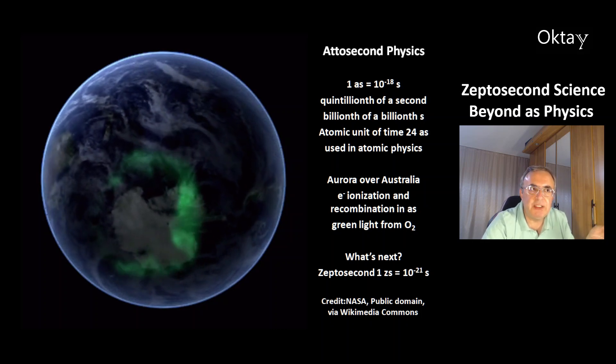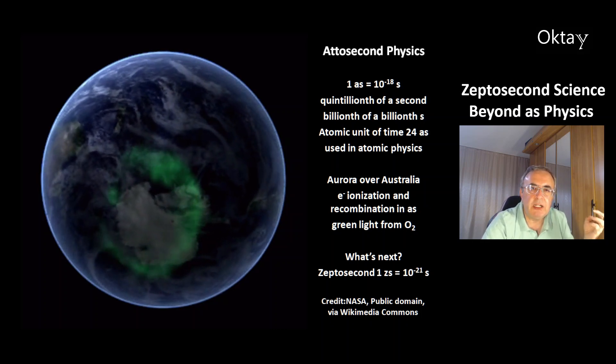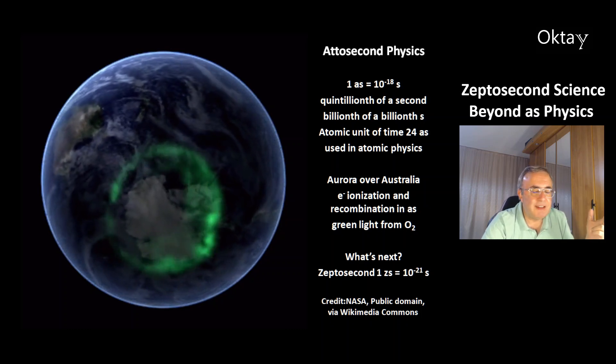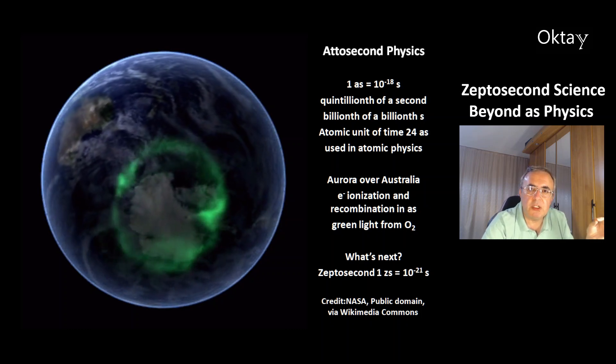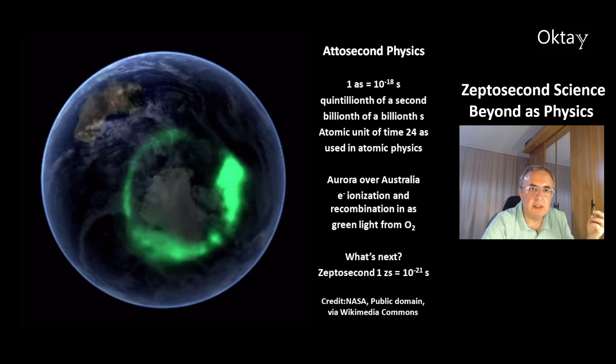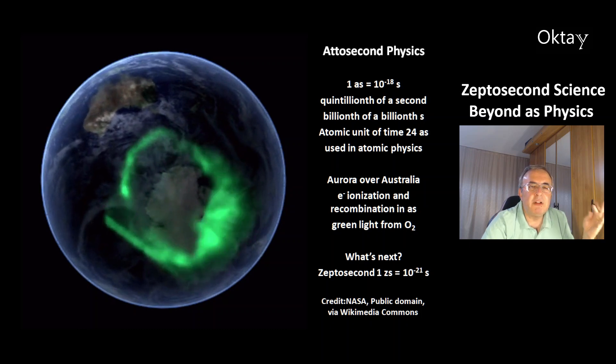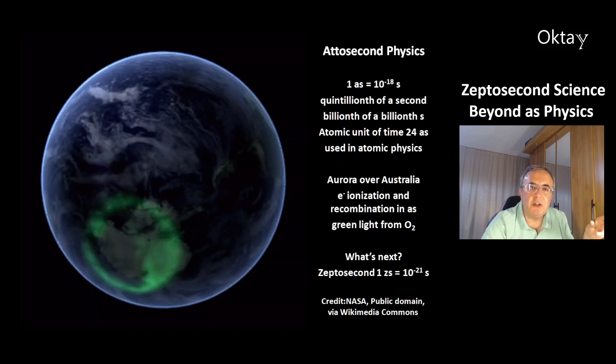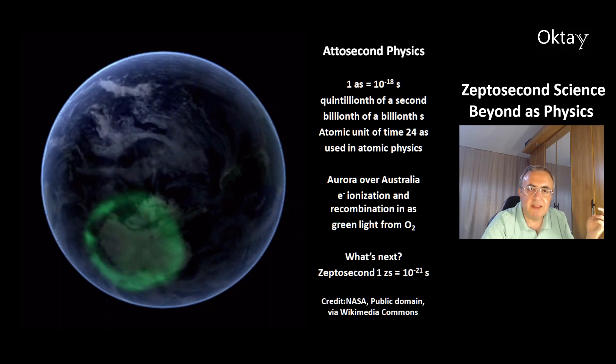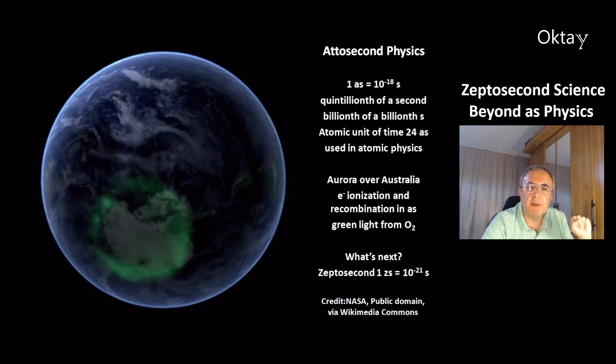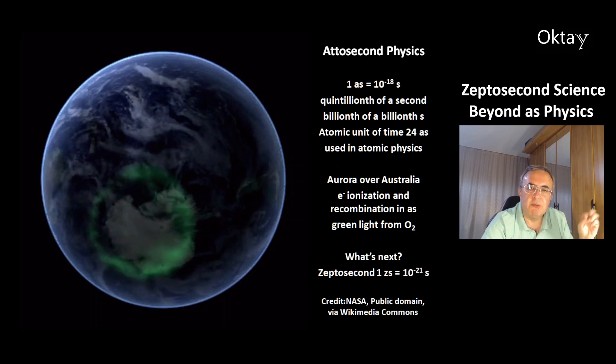The atomic unit time uses 24 attoseconds for atomic physics. And this is a nice movie of Aurora over Australia, which is an example of attosecond phenomena. Because the electron ionization and the recombination in the oxygen molecule happens in attosecond time periods. The green light comes from the ionization of the oxygen molecule.